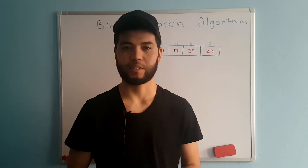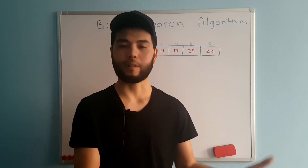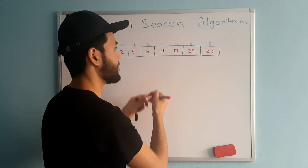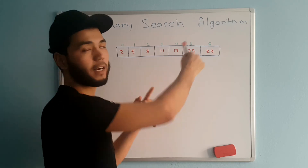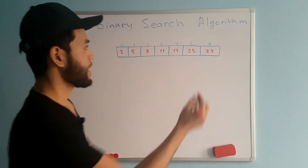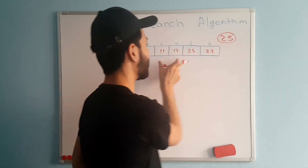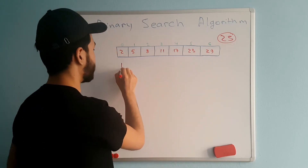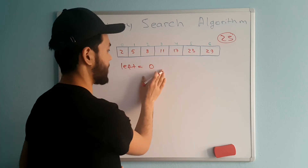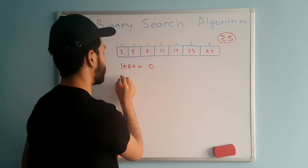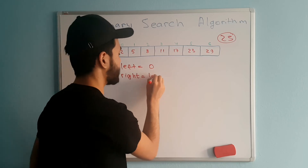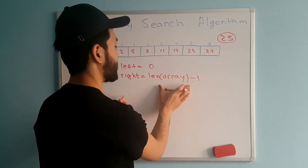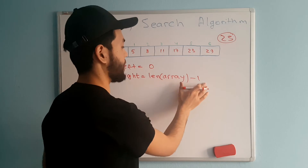Binary search is also known as half-interval search or logarithmic search. Every time we divide our array by half, take the middle element, and compare it with the target value. For example, to search for 23 in an array, we first define left and right variables. Left is always zero, and right is equal to the length of the array minus one.